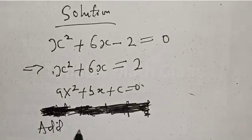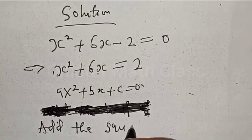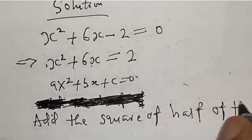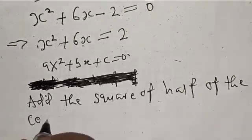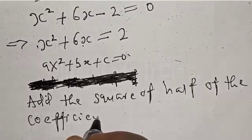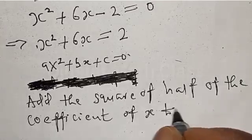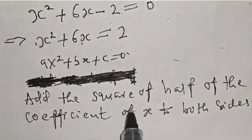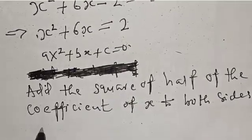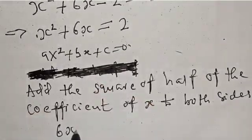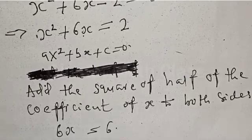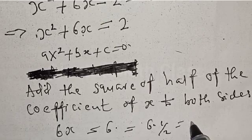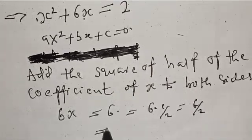What do we do next? We add the square of half of the coefficient of x to both sides. The coefficient of x is 6, so half of 6 is 3. Then we square it, giving us 3² = 9, and we add this to both sides.